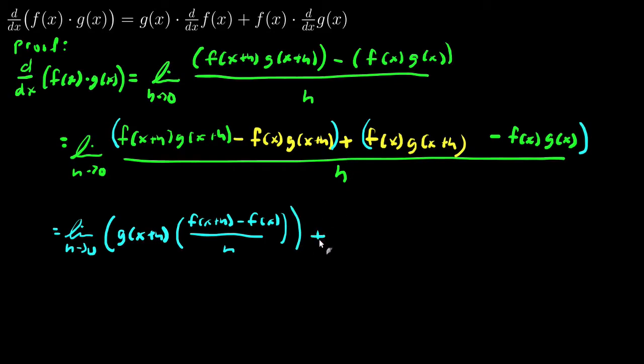And, I have plus the limit as h approaches zero. And, both of these terms have an f(x). And, when I factor that out of the numerator, I'll be left with a g(x+h) minus g(x) all over h.